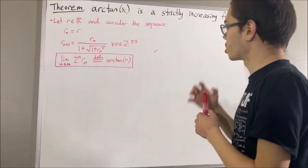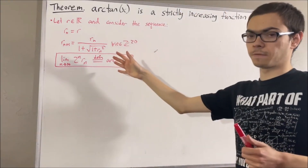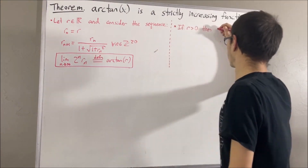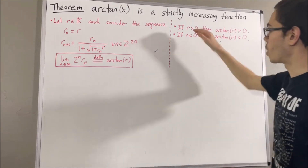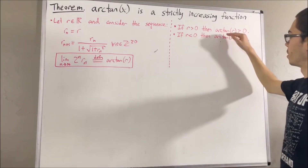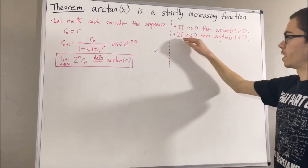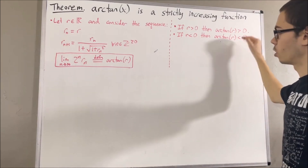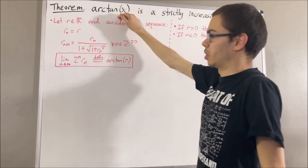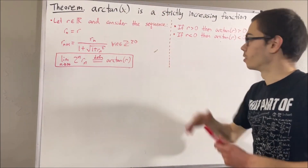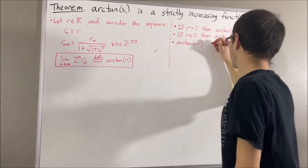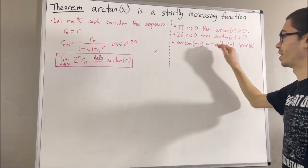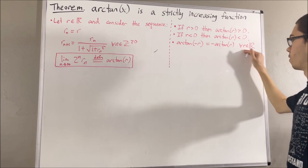Some properties we proved about the arctangent function include the following. If r is greater than 0, then the arctangent of r is greater than 0. And if r is less than 0, then arctangent of r is less than 0. We also proved that the arctangent function is an odd function, which means arctangent of negative r is equal to the negative of arctangent of r for all real numbers r.